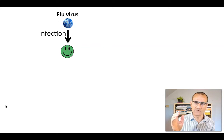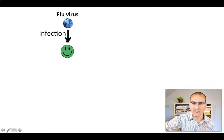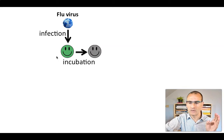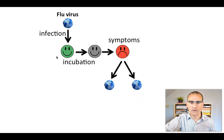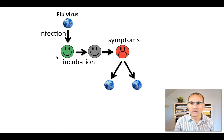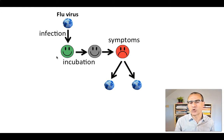Let's talk about the flu virus. When you catch the flu, the flu virus infects you. You don't immediately develop symptoms — you don't right away develop a fever, chills, or muscle soreness. You first go through a period of incubation in which the virus is basically spreading all over your body, and then eventually you feel sick and become contagious.